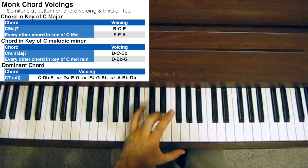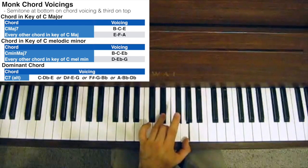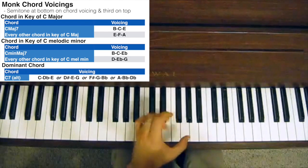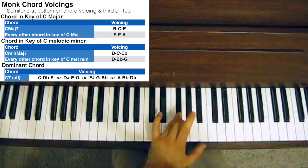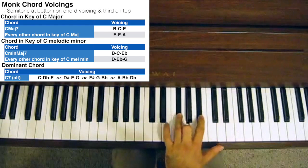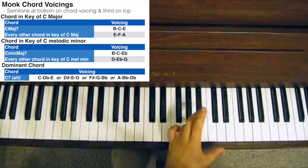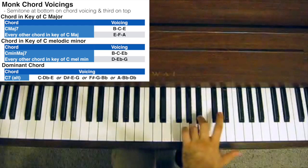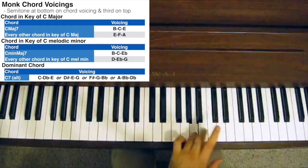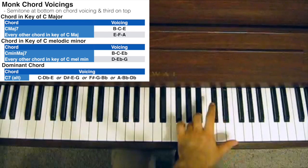If we play Eb, E, G, that would be a C7 sharp 9, that being the sharp 9. If we play F sharp, G, Bb, we've got the sharp 11, the 5th and the 7th. And then if we play A, Bb, Db, we've got the 13th, the b7th and the b9th.